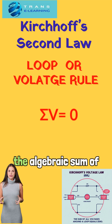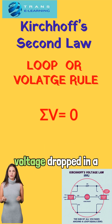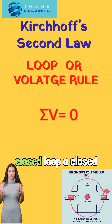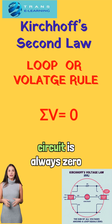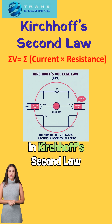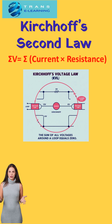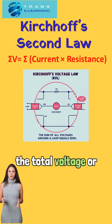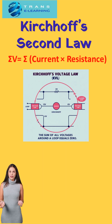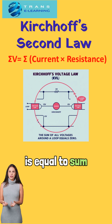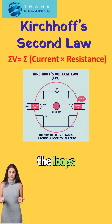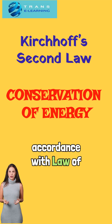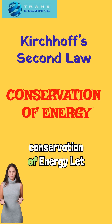Kirchhoff's second law states that the algebraic sum of voltages produced and the voltage dropped in a closed loop — a closed path — of an electric circuit is always zero. In Kirchhoff's second law, the total voltage or EMF around the loop is equal to the sum of the products of current and resistance of all the loops. This law is in accordance with the law of conservation of energy.